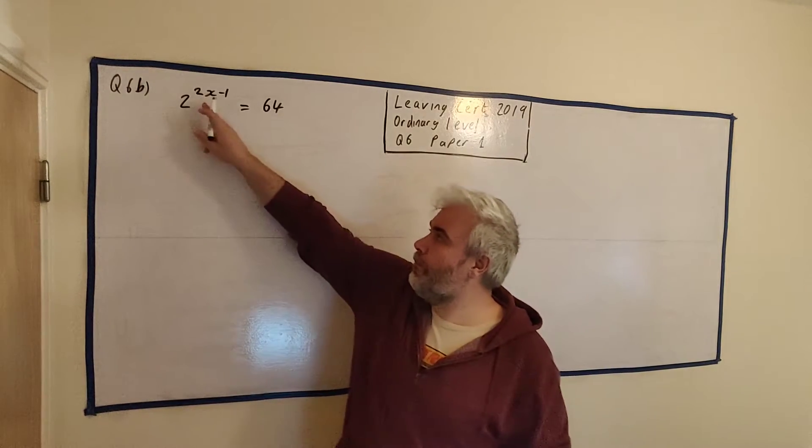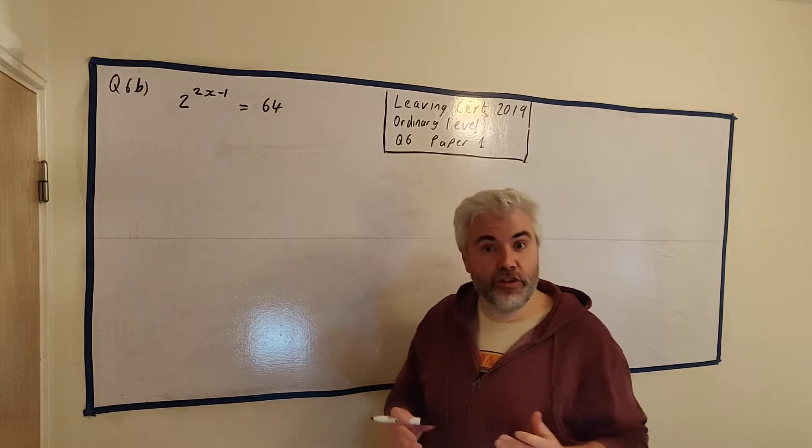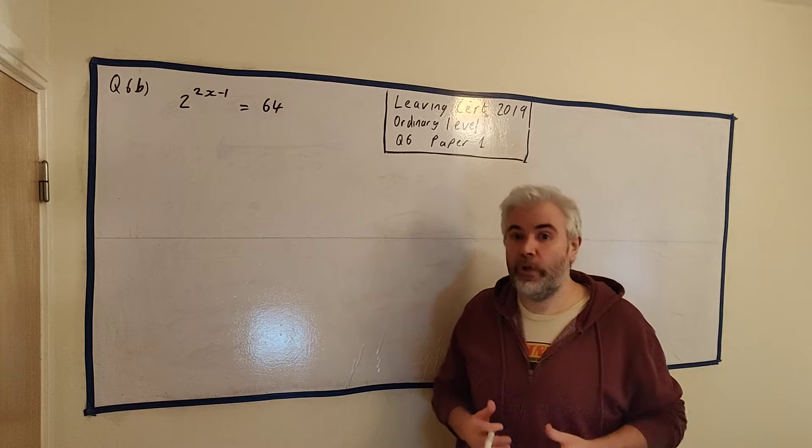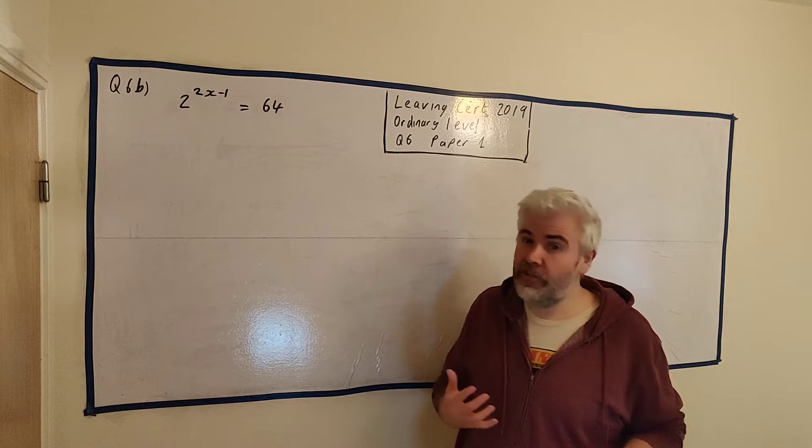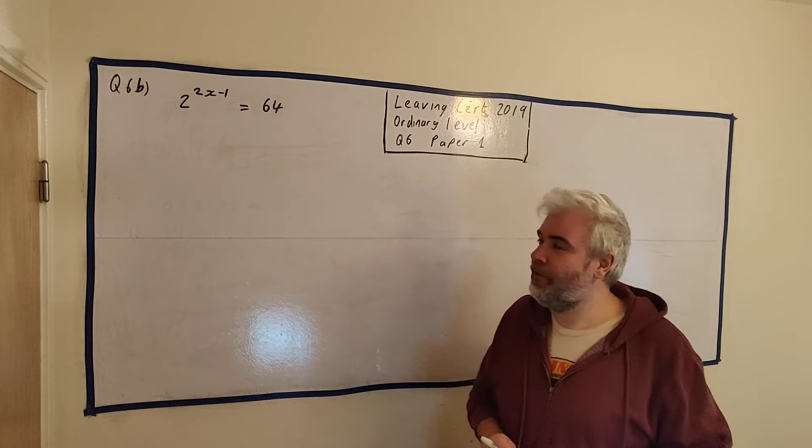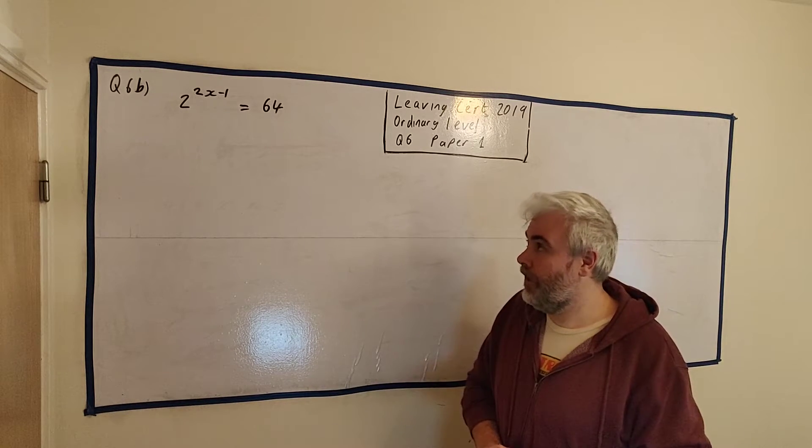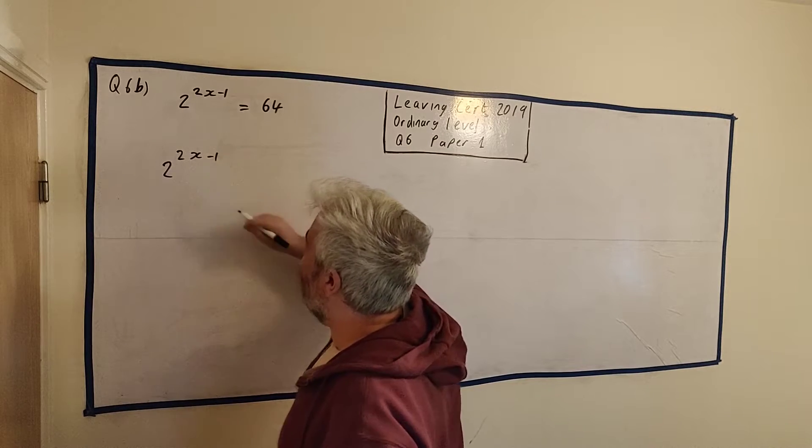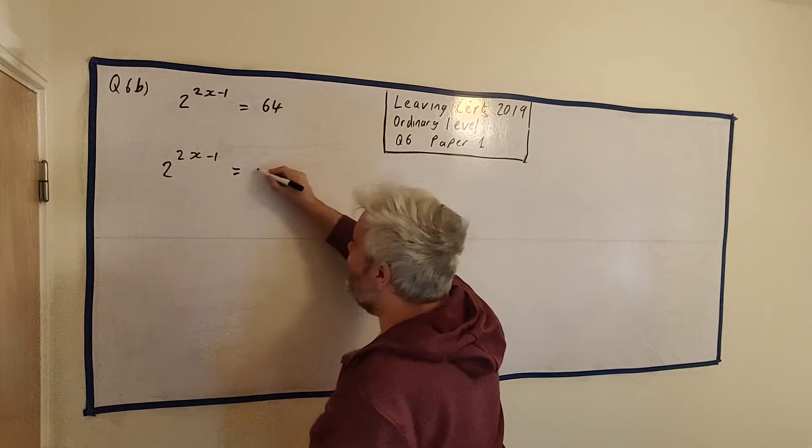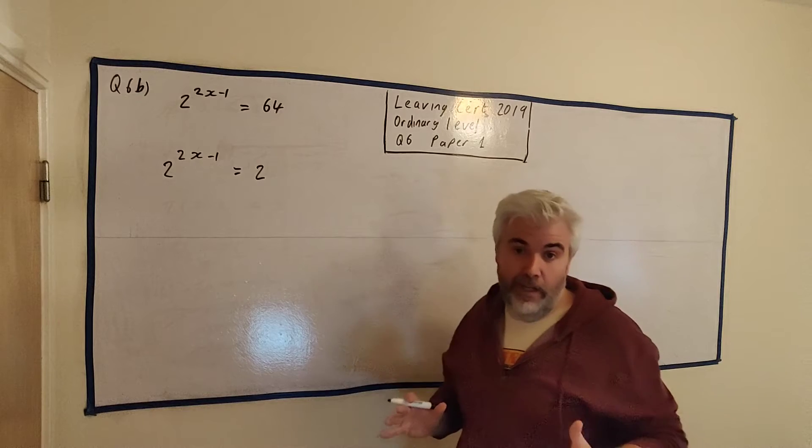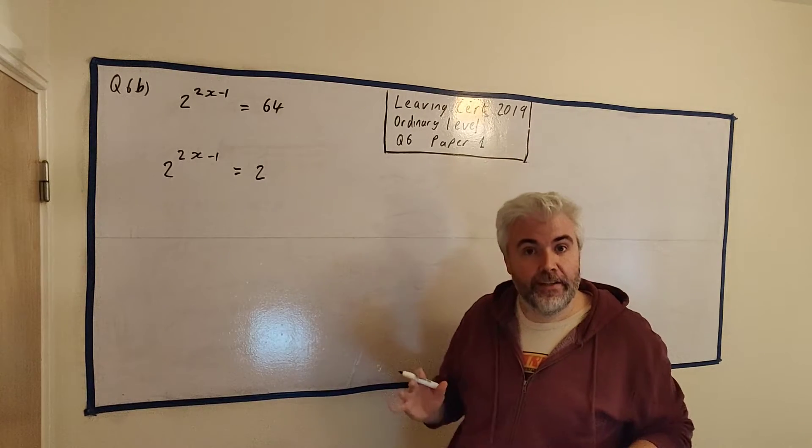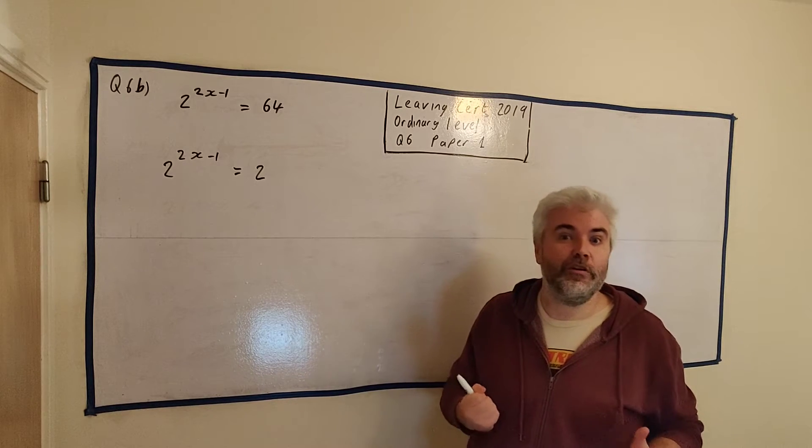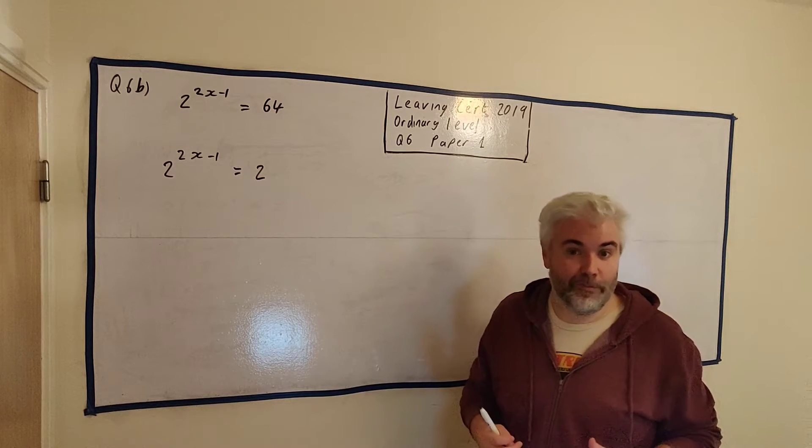So here we have part B. 2^(2x-1) = 64. Solve for x. Now this looks very complicated. You can do this two ways. One is involving logarithmics, which we do not teach in the ordinary level. So I will show you that at the end. But for now, I'll show you how you would be expected to do it in the ordinary level. The first thing we need to do when dealing with powers is we need all numbers to have the same base. We need 2 to the power of something here. The hint here is 64 must be 2 to the power of something.